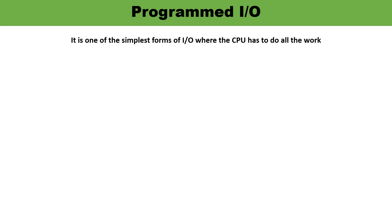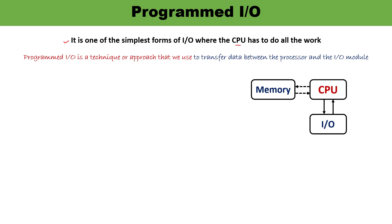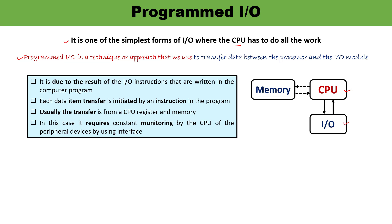First is Programmed IO. This is one of the simplest forms of input-output, and here the CPU has to perform all the tasks. In this technique, data transfer between the processor and the IO module is done via CPU only. The IO instructions are written in the computer program, and when the program is executed, each data item transfer is initiated by an instruction written in that program. The transfer is generally from CPU register to memory.